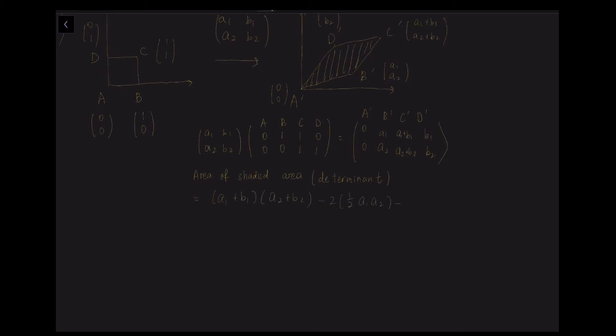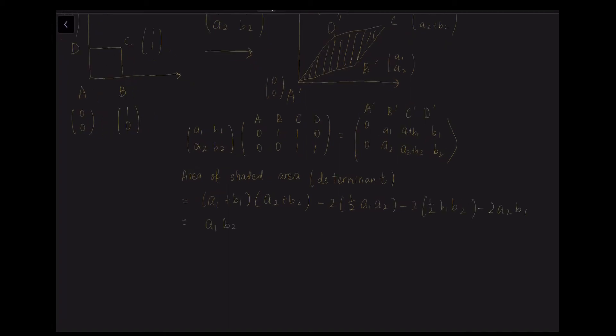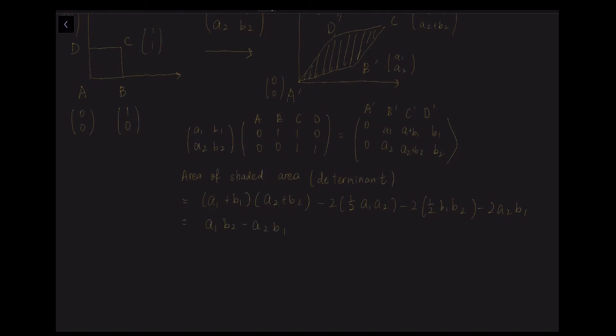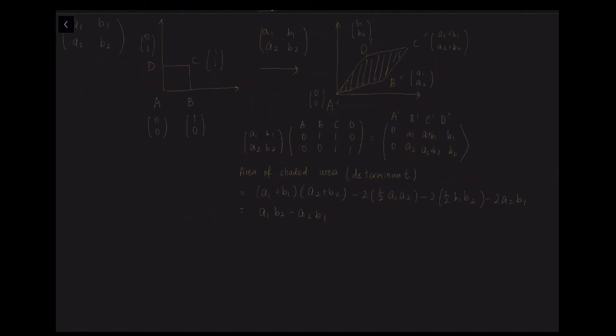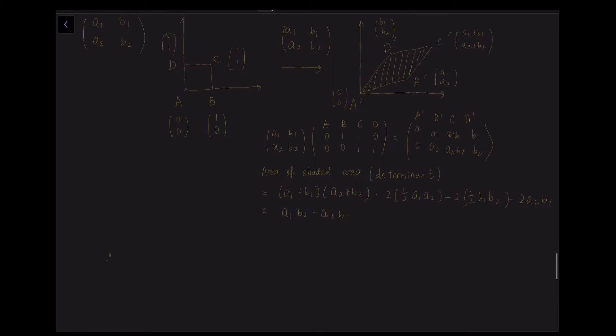But we can conclude that the area of the shaded area is A1 times B2 minus A2 times B1. And we can write the notation of the determinant by changing the original bracket into two straight lines. The straight lines will indicate the determinant of the matrix, which is A1 times B2 minus A2 times B1.